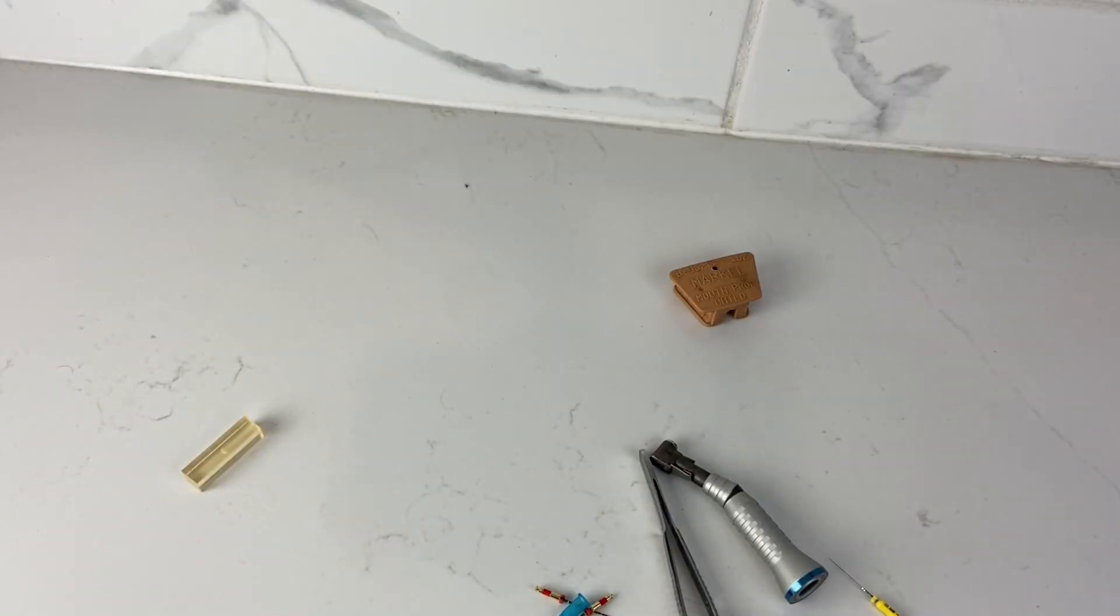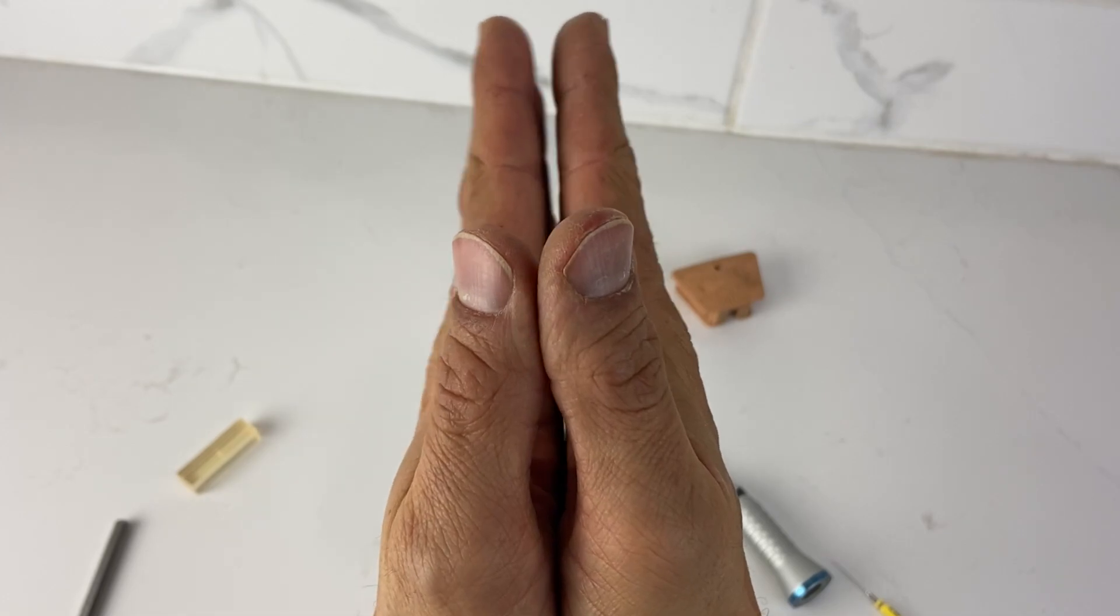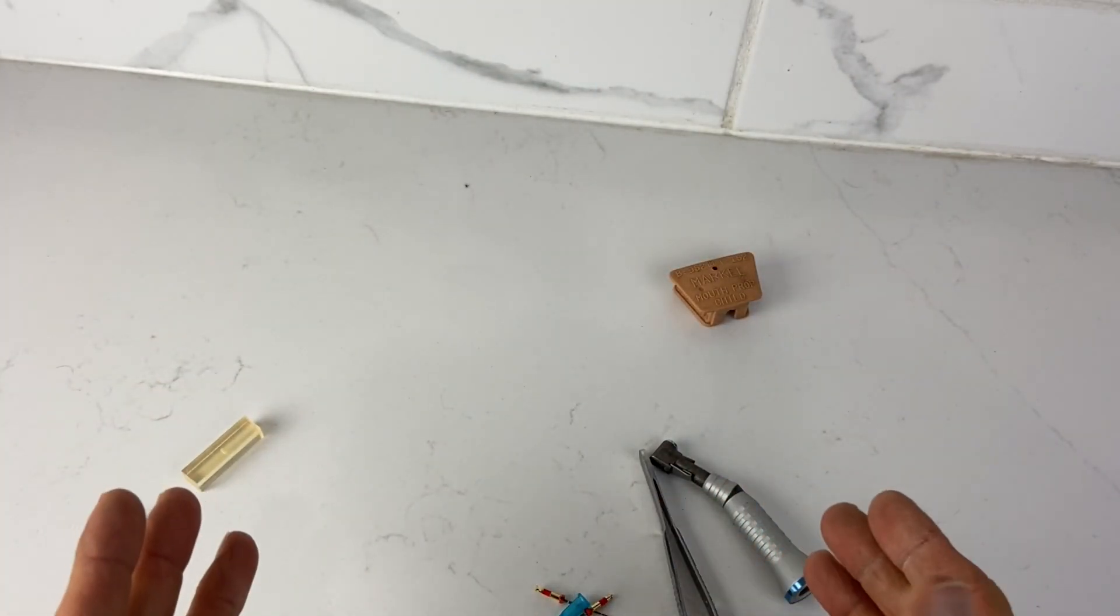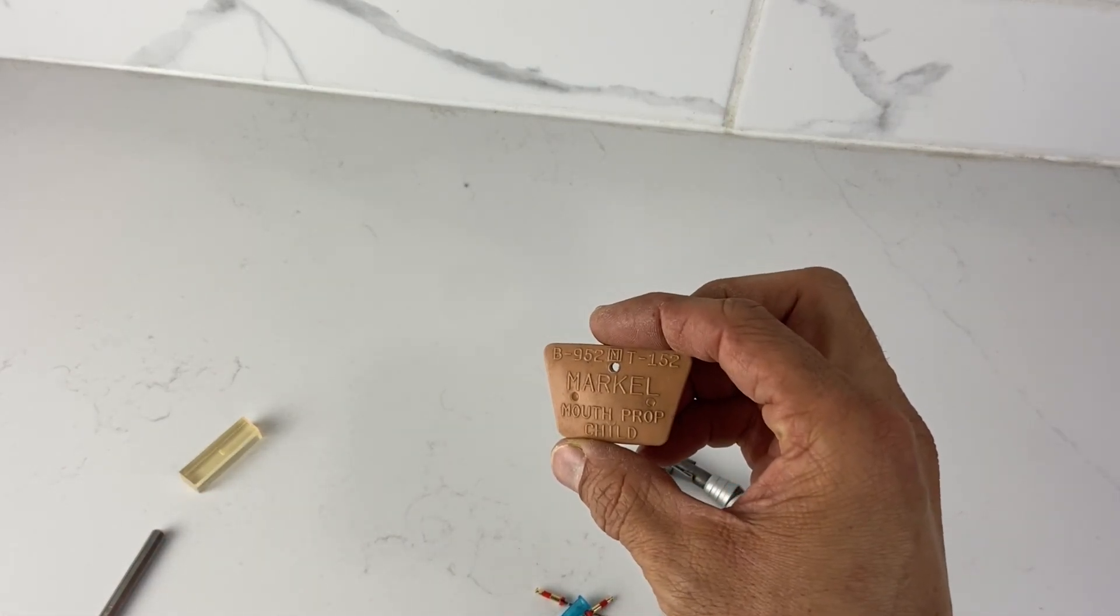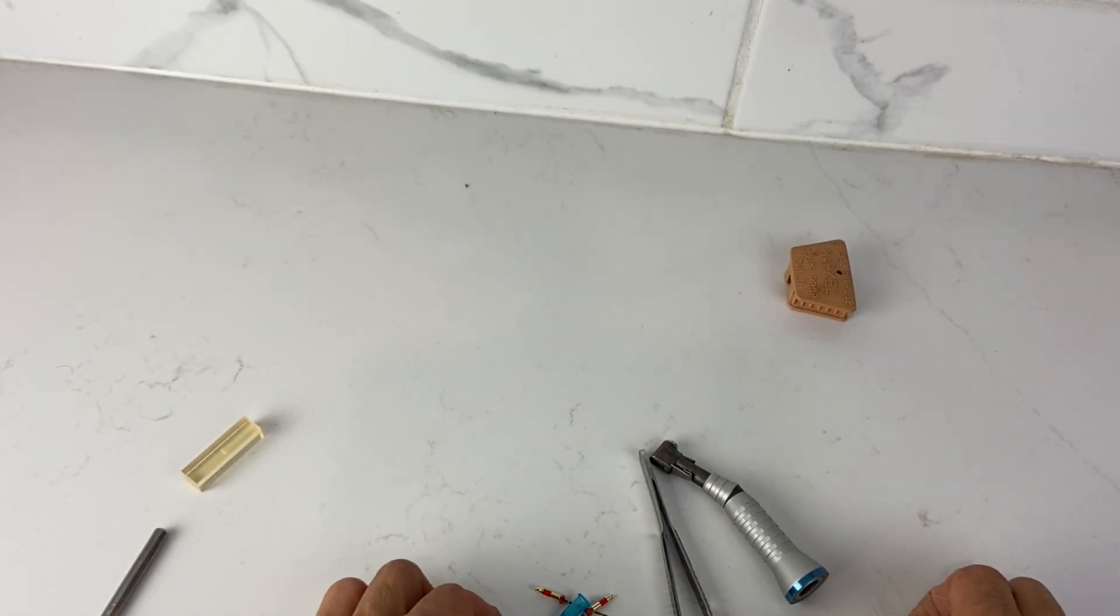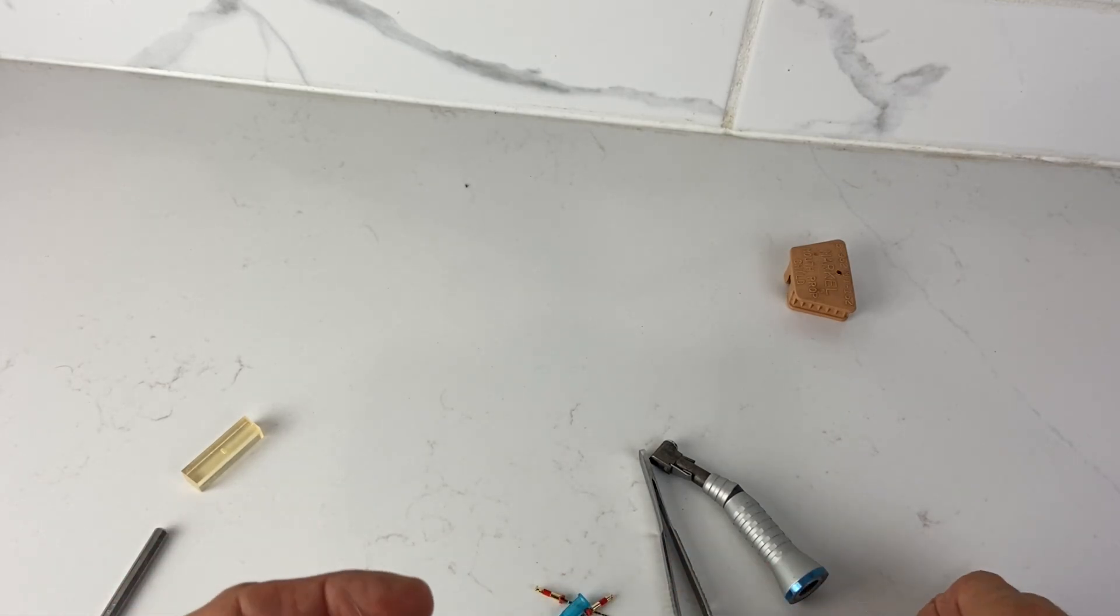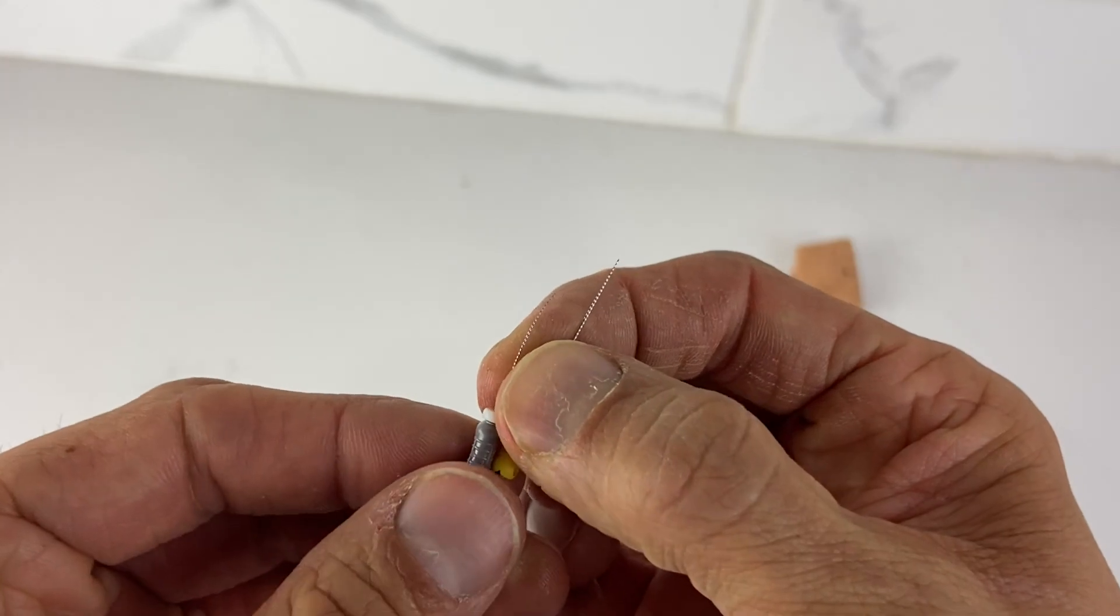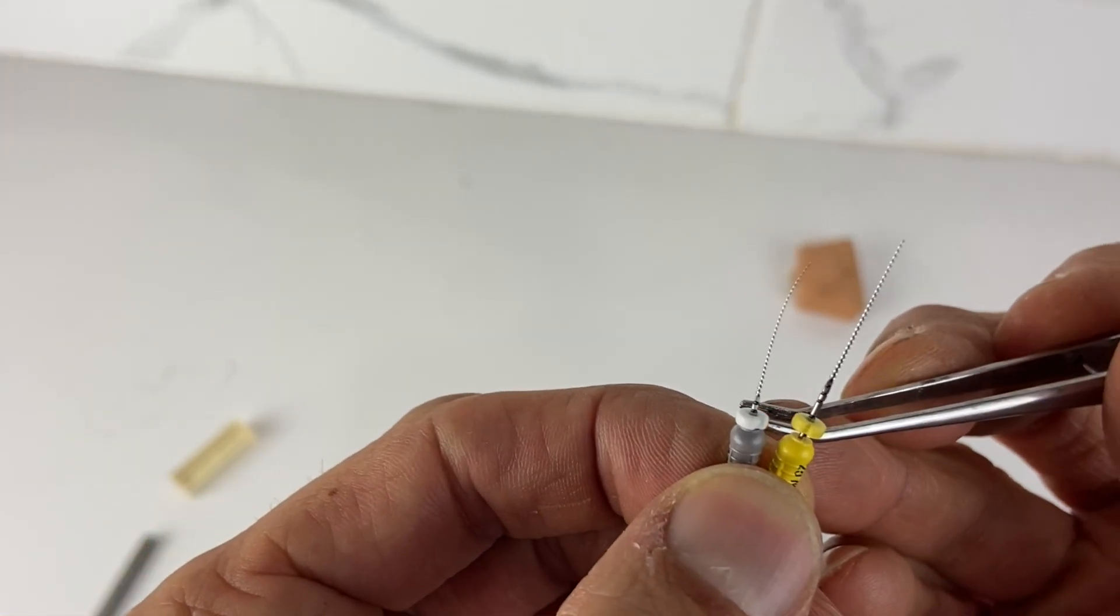So the question is trying to do an endo on somebody who cannot open very wide. If this is normal opening, they can only open this much. I'm doing this at home. I just want to go over some of the tips. I have the basic stuff. The first one I'm going to do is I'll use a bite block every time. Every case gets a bite block unless they don't want it.